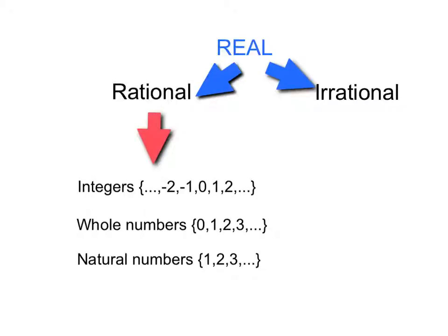The whole numbers include the natural numbers, except there's one more number included, and that's the number zero. Because zero has a hole in it, so it should belong to the whole numbers. And you can see that they start with zero and also continue in the positive direction forever.